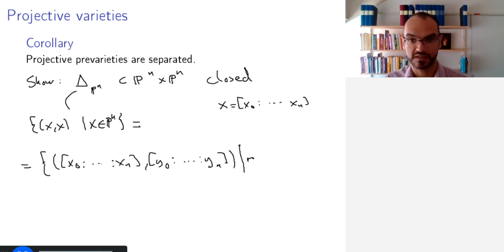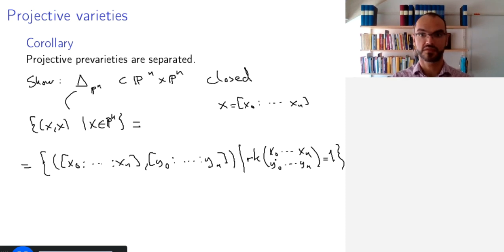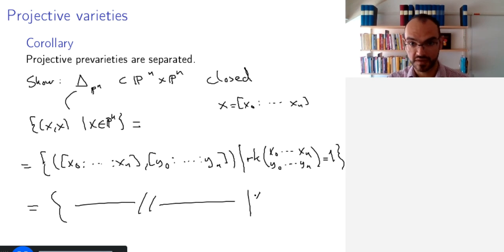That are the same as points in projective space, or as lines in affine space. And this line criterion we can describe using linear algebra as the rank of the matrix with two lines—first line x_0 to x_n, second line y_0 to y_n—the rank being 1. The rank can't be 0 because we are excluding the origin. And so if we want these to define the same line, the rank has to be 1.